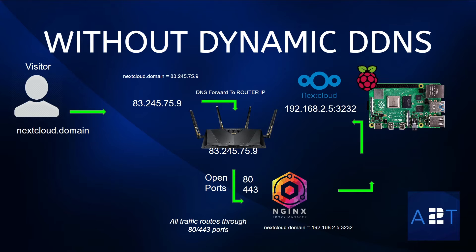Looking at our current scenario on our Raspberry Pi, we have a visitor who wants to get to our Nextcloud service. This is a container and he knows the domain name — a subdomain like nextcloud dot our domain name. We have a domain name owned by a registrar where we have set an A record connecting our domain to the IP address of our router.